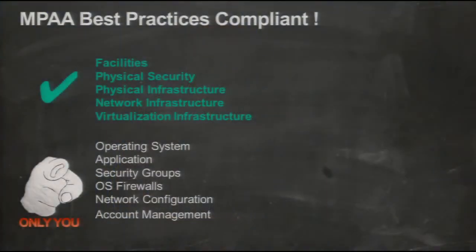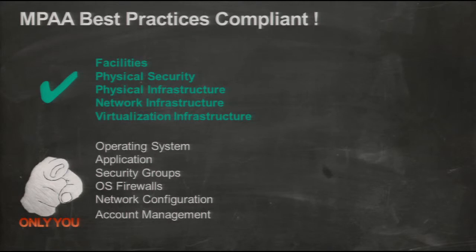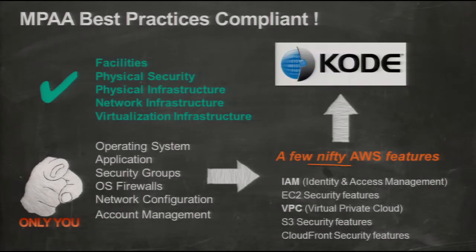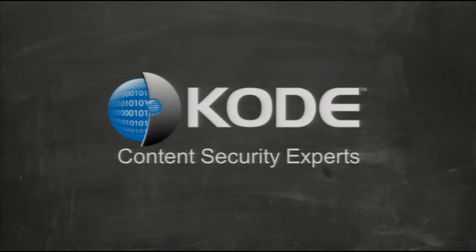From an MPA best practices compliance perspective: physical infrastructure security is handled by AWS, already audited by Code to be in compliance with best practices. You have access to the guest operating system and the applications on top, and with the help of AWS features — IAM, EC2 security, VPC, S3, CloudFront, etc. — you can build a really secure model. Once you have these best practices in place, you can work with one of our partners like Code to audit your application environment and map it back to the MPA best practice guidance. With that, I'd like to introduce Heidi Kajawa from Code, who helped us with the audit for our security controls and MPA best practices.